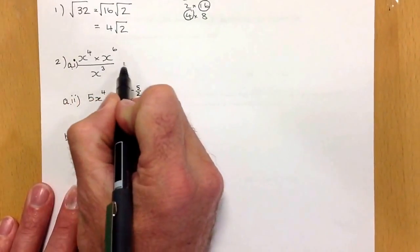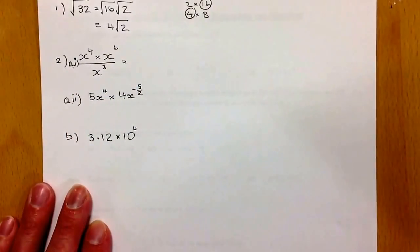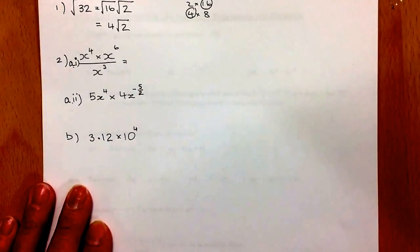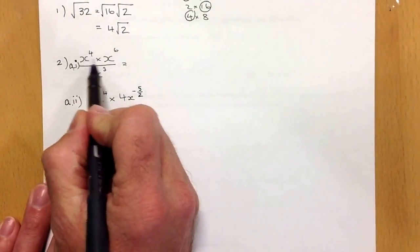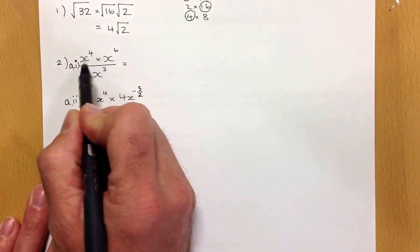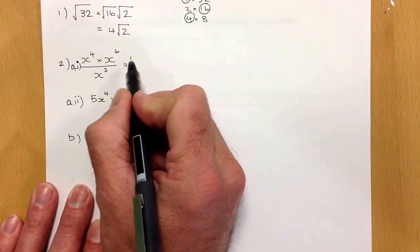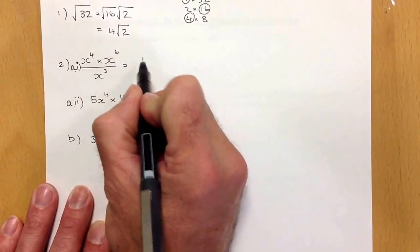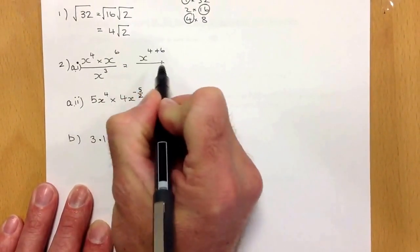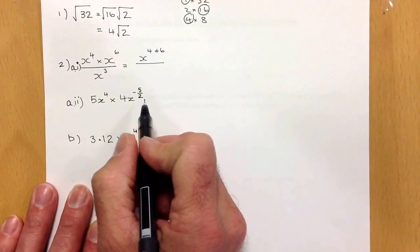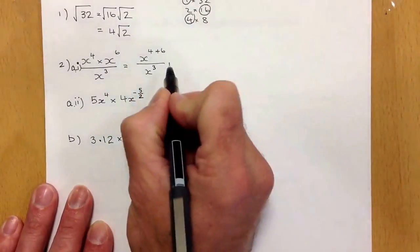Question 2a, part 1 is an indices question. I'm going to be simplifying this expression using the laws of indices. When I multiply x's with indices, I'll add the indices together. So I'll start with x, and it's going to be to the power of 4 plus 6, and it's all still going to be over x to the power of 3. I haven't changed that at all.